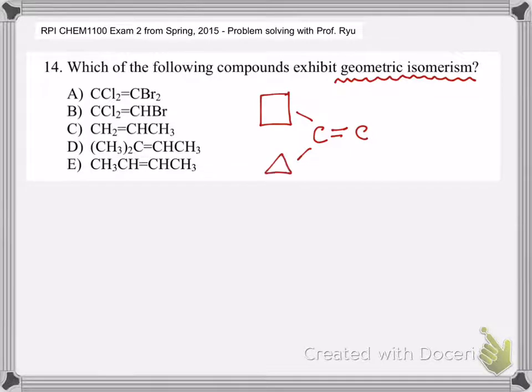The easy one is when you have a double bond here. This side and that side is different, and this side and that side is different. Then you can have a geometric isomer and we can call it cis or trans or E and Z scheme.